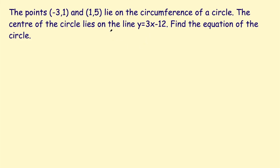In this video I'll be going through a couple of circle geometry questions. The first question is the situation where you have two points on the circle and a line through the center. The question says the points negative 3, 1 and 1, 5 lie on the circumference of a circle. The center of the circle lies on the line y equals 3x minus 12. Find the equation of the circle. I encourage you to pause the video here and have a go at this yourself before I go through it.